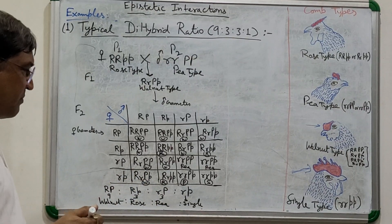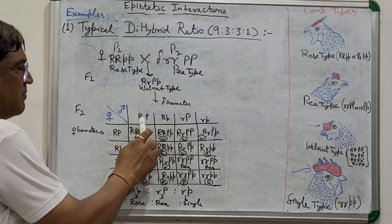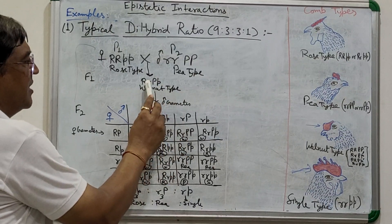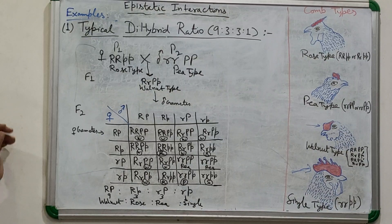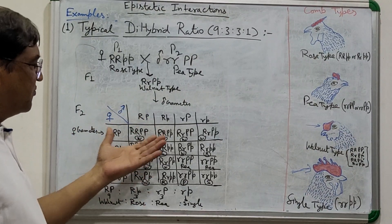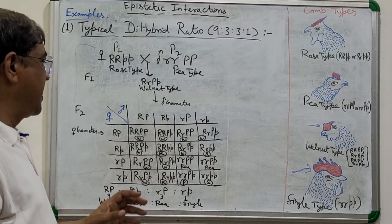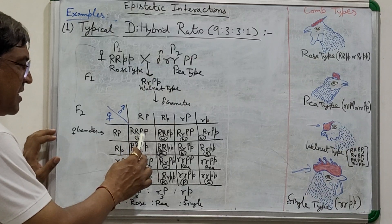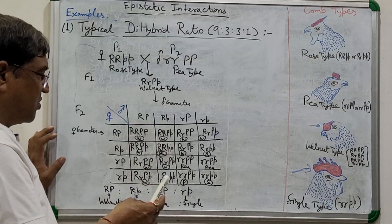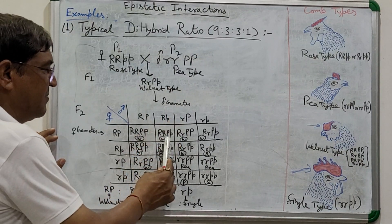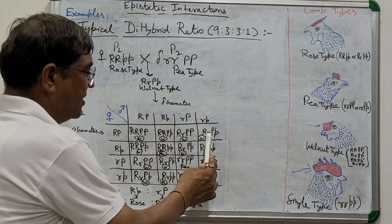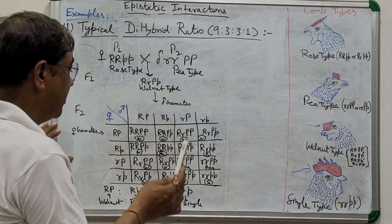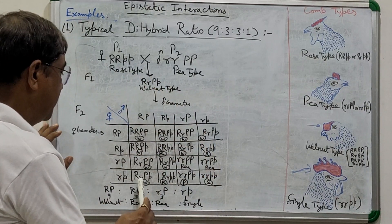Both male and female produce four types of gametes: capital R capital P, capital R small p, small r capital P, and small r small p. When you look at the combinations in the checkerboard, you get the 9:3:3:1 ratio — 9 walnut : 3 rose : 3 P-type : 1 single-type comb.